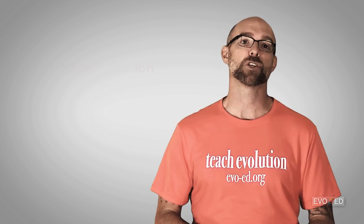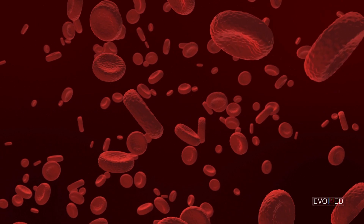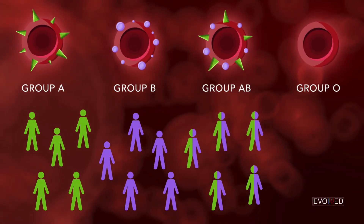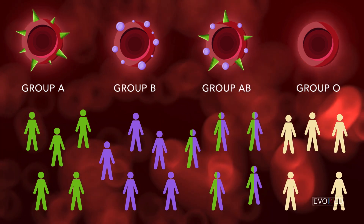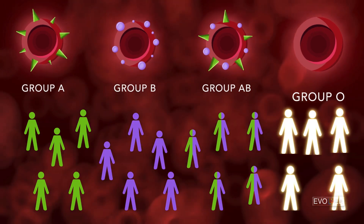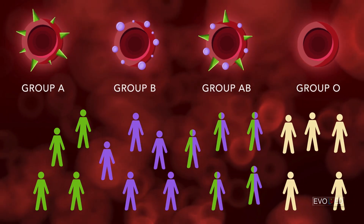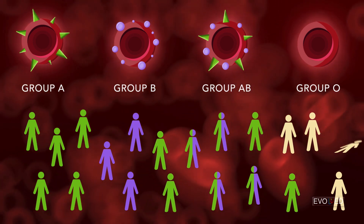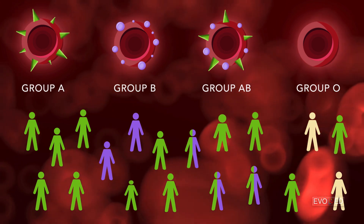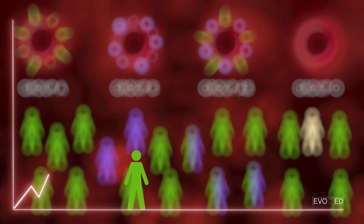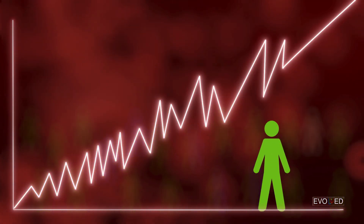To explain this, I could use human blood types as an example. Humans can have one of four blood types: A, B, AB, and O. If we had enough time and willing participants, we could actually track the number of A's, B's, and O's present in a given population over time — over generations. If for some reason there was a benefit to having a blood type associated with an A, a B, or an O, then the frequency of that particular allele in that population would increase over time.